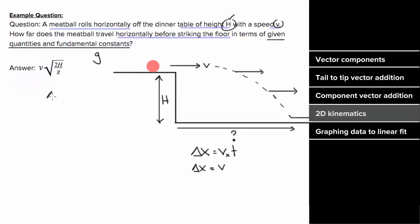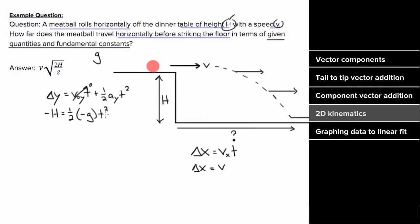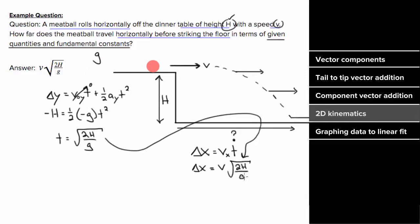We know the speed in the x direction — it remains constant, so this v is the horizontal speed for the entire trip. We can plug in v for the speed, but we don't know the time of flight. To get the time of flight, we'll do another equation for the vertical direction. The vertical displacement is negative h since the meatball fell downward, and the initial velocity in the y direction is zero since the meatball had no vertical velocity when it left the table — only horizontal velocity. The acceleration is negative g. This lets us solve for t, giving the square root of 2h over g, which we bring over to get the horizontal displacement of the meatball before it hits the ground.